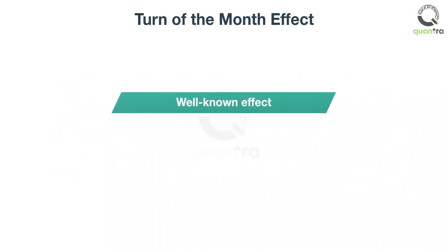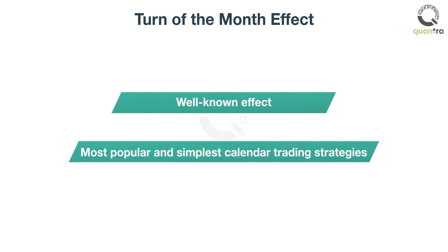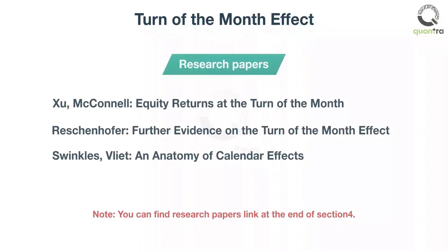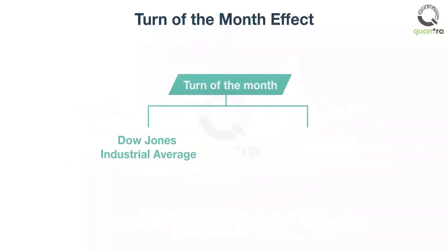The turn-of-the-month is a well-known effect on stock indexes. It is one of the most popular and simplest calendar trading strategies. The anomaly is based on an observation that prices usually increase during the last four days and the first three days of each month. Distinct researchers identified this effect for various periods, both in the Dow Jones Industrial Average and also in the S&P 500 Index. Therefore, the strategy is widely accepted by academics and popular among practitioners because of its simplicity and profitability.